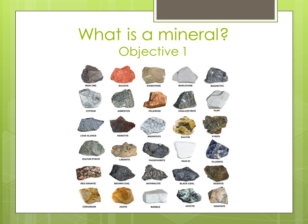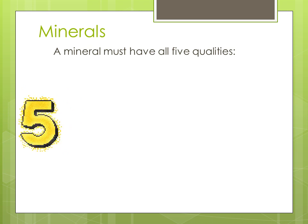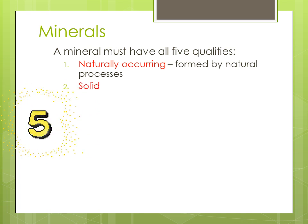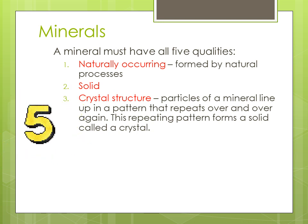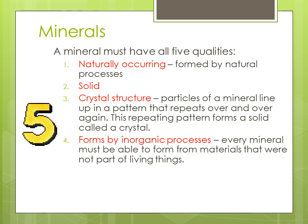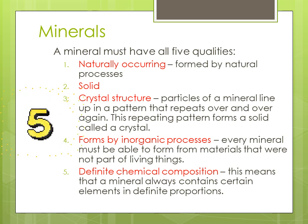Objective number one: what is a mineral? Minerals have to have these five qualities, and they must have all of them. They must be naturally occurring, meaning formed by natural processes. They must be solid. They must have a crystal structure — particles of a mineral line up in a pattern that repeats over and over again, forming a solid called a crystal. They form by inorganic processes, meaning from things that were not living. And they must have a definite chemical composition, meaning a mineral always contains certain elements in definite proportions.